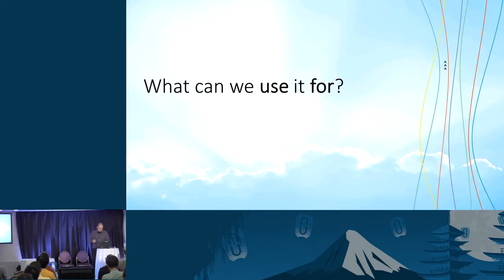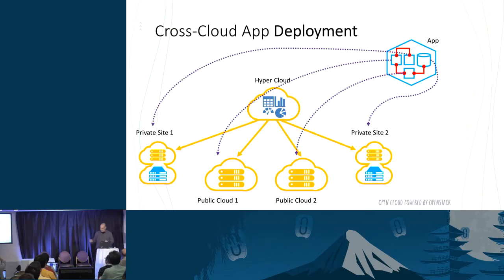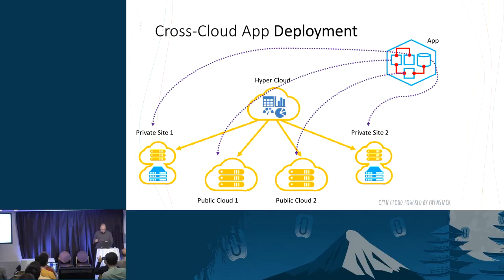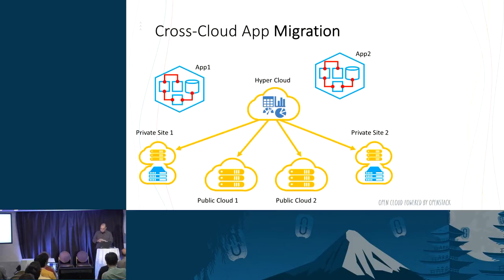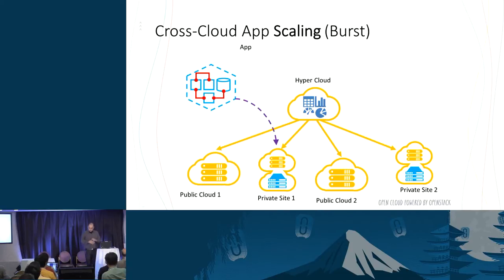What can we use it for? A few use cases. Cross-cloud application deployment: you have an application — deploy the database at your private site, the web front-end instances on other sites, the application back-end in a different site. Cross-cloud application migration: move an application from your private side to the public side, or back. Cross-cloud application scaling, or cloud burst: you have an application running on a certain load and you want to scale it out to different clouds without all the configuration required.